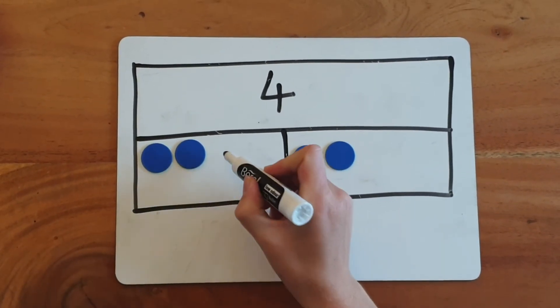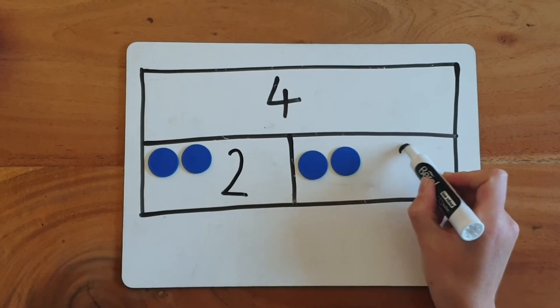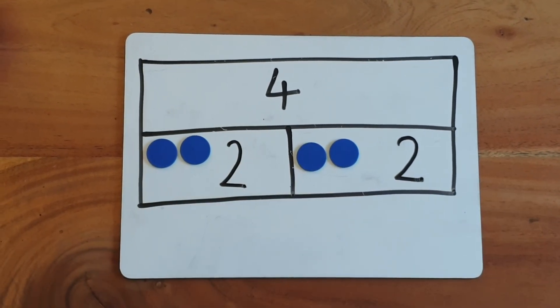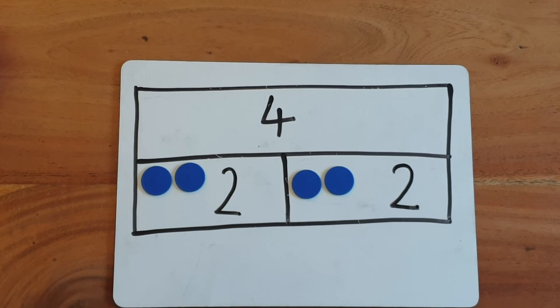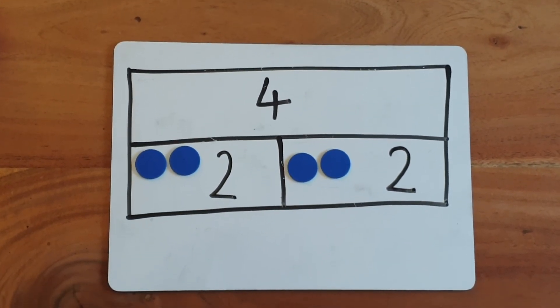So there's two on this half and two on this half. We have shared the number four into two equal groups of two.